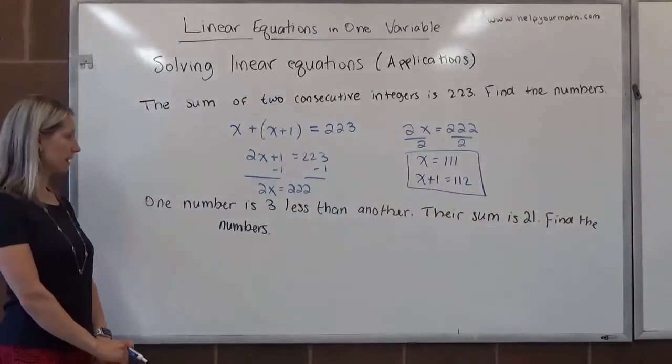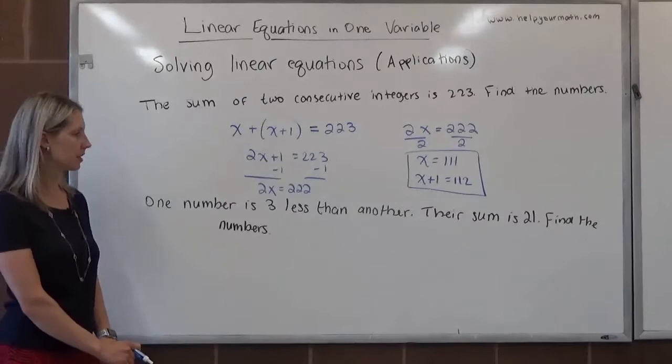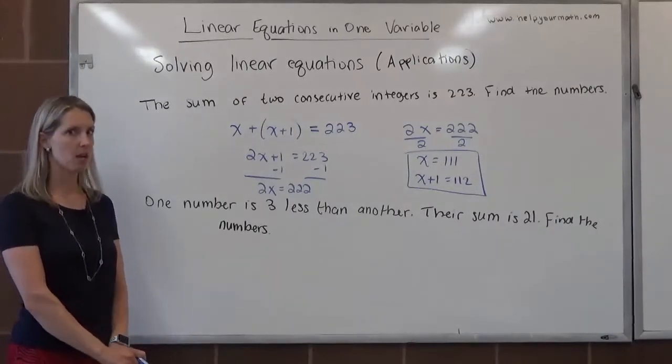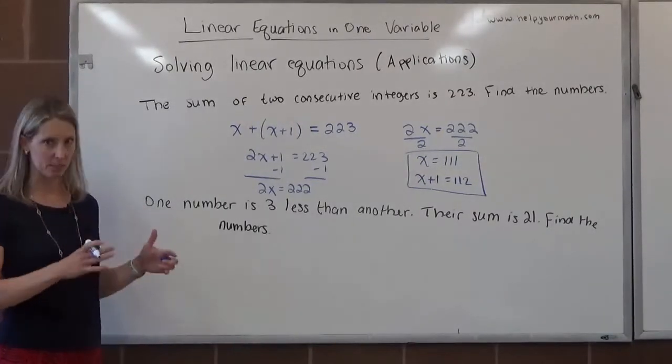In the next example, one number is 3 less than another, their sum is 21, find the numbers. We have a little bit more going on here, we're going to break this up sentence by sentence.